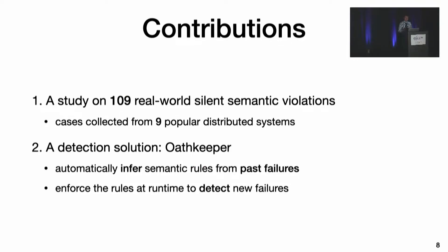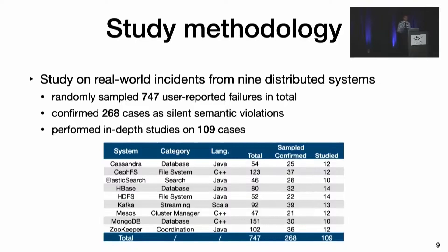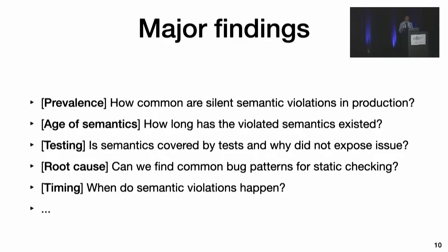To shed some light on this class of failures, we conducted an empirical study on 109 real-world silent semantic violations and summarized a number of quantitative findings. Guided by insights from our study, we built a system, OathKeeper, to detect silent semantic violations. Our study covers nine representative distributed systems. We randomly sampled more than 700 user-reported failures from the issue trackers of these systems, filtered out incidents with clear error signals, and confirmed 268 silent violations. In the end, we performed in-depth analysis on 109 sampled cases. Our study is driven by research questions such as prevalence, age, and timing of semantic violations.